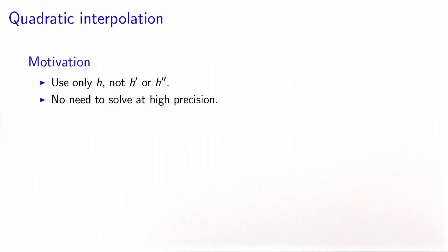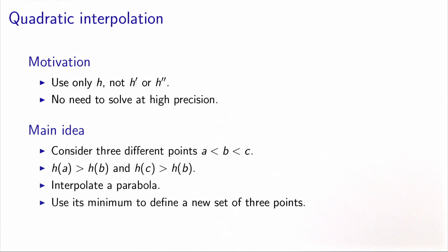Because our objective is just to find the next iterate, we don't need to solve this unidimensional problem at high precision — a good approximation is enough. The main idea is to maintain at each iteration three ordered points A, B, C, with the property that h(B) is strictly less than h(A) and h(C). We update these three points each iteration by fitting a parabola through A, B, C and minimizing it to find a candidate to replace either A, B, or C. The convexity of the parabola is guaranteed by h(B) being strictly less than h(A) and h(C).